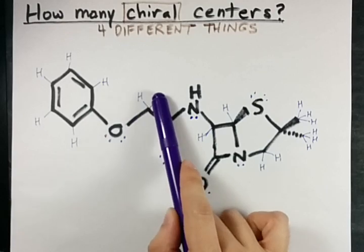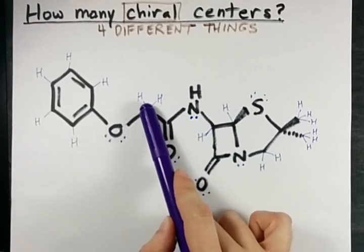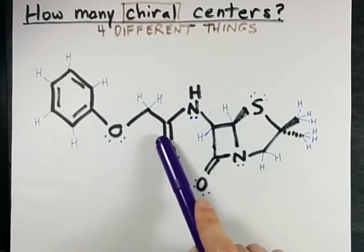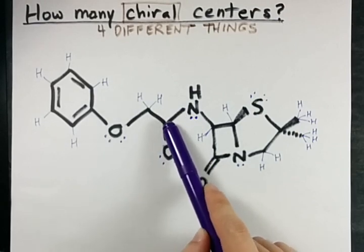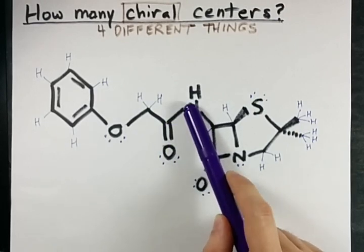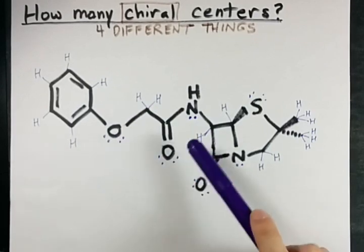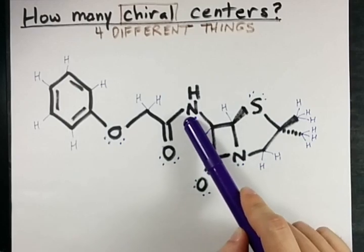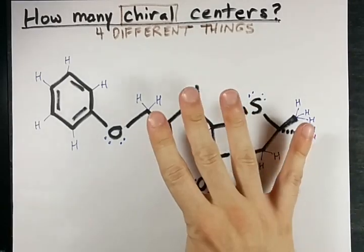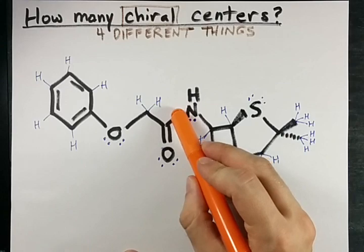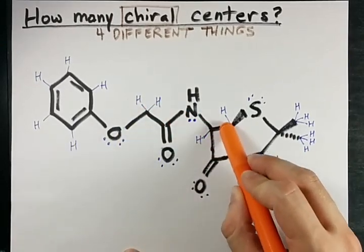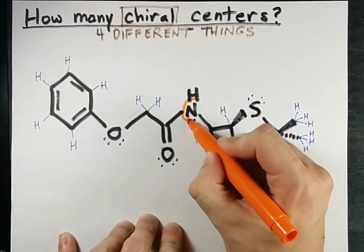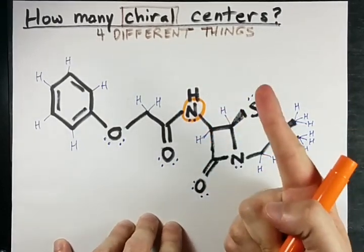This carbon has two hydrogens, which are the same — not chiral. This carbon is only connected to three things — not chiral. This nitrogen is connected to this chain, this ring, a hydrogen, and a lone pair. That's four different things! The chain, the ring, the hydrogen, and the lone pair are all different. That means this nitrogen is a chiral center — that's one.